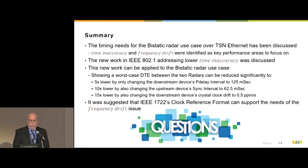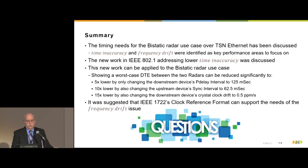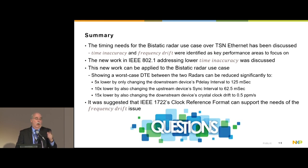In summary: the timing needs for bistatic radar use cases have been discussed. Both time inaccuracy and frequency drift were identified as key performance areas. The new work in 802.1 addresses timing inaccuracy and can be applied to the bistatic radar use case, showing 5x, 10x, and 15x lower error using known parameter adjustments — all through software changes. It was also suggested that the IEEE 1722 Clock Reference Format can support the frequency drift issue. Thank you very much.